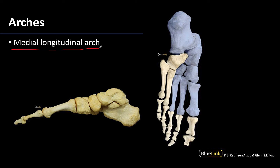It is located on the medial side of the foot, composed of the bones of the medial side shaded blue here. These bones fit together to form this arch. The fit of the bones forms the arch, and then accessory structures such as ligaments, tendons, and the plantar aponeurosis play a role in terms of stability of the arch.